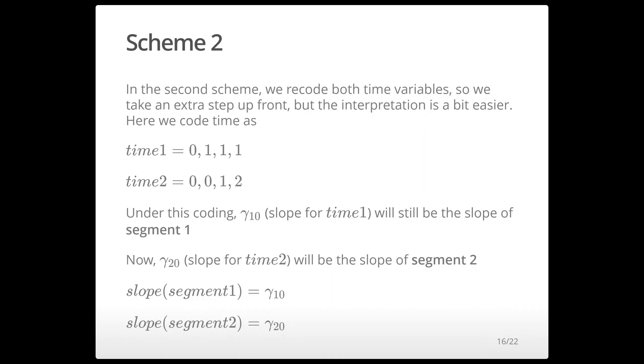So the alternative approach we have to take a little do a little more work up front but it makes our interpretation easier on the back end. So here we recode both of our time variables so the first time variable now gets coded 0, 1, 1, 1 and the second as 0, 0, 1, 2.